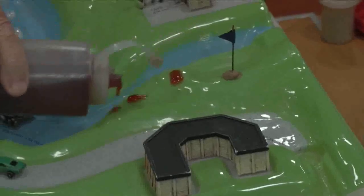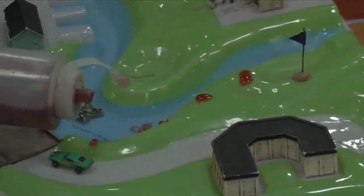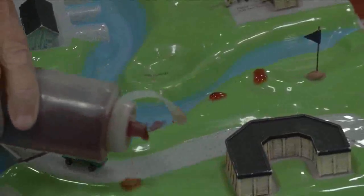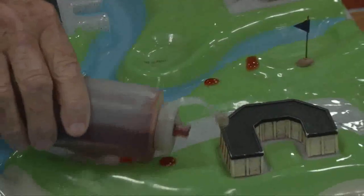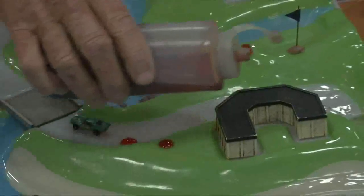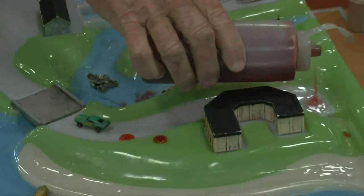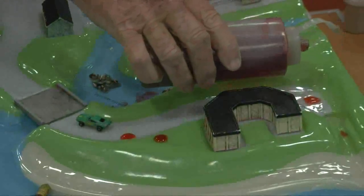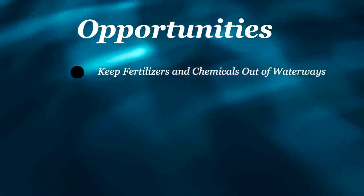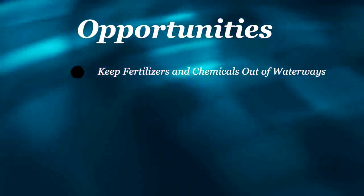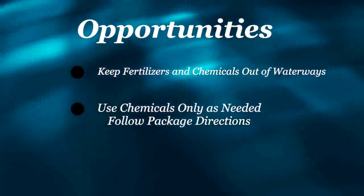Fertilizers and pesticides are used to make the course nice and green and playable. People enjoy playing golf on neat green golf courses. Fertilizer and chemicals such as herbicides and pesticides are used for golf course maintenance. Stormwater picks up and delivers untreated chemicals and fertilizer to waterways. Keep fertilizers and chemicals out of our waterways in the first place. Use chemicals only as needed and follow packaging directions.